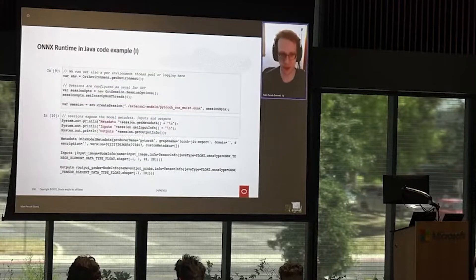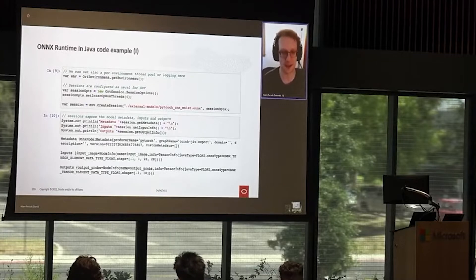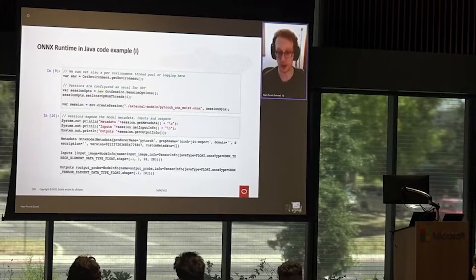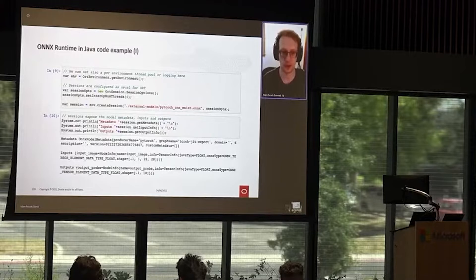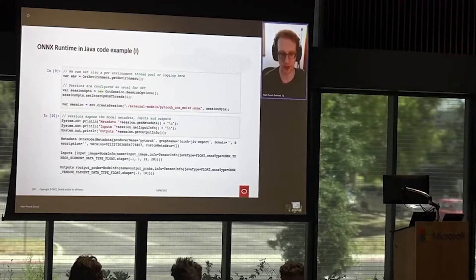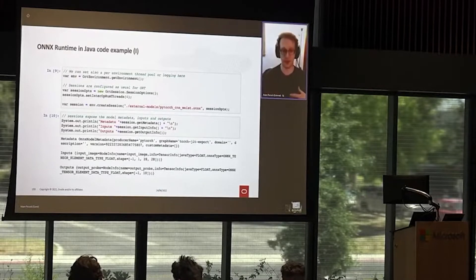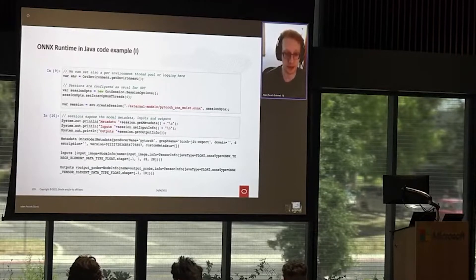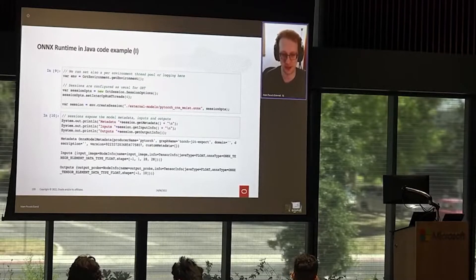Let's look at a quick code example. It looks very much like the Python and other APIs — we're trying to be simple and similar to other things. You have to make an ONNX environment, where you can control a per-environment thread pool or the logging. Then you make some session options, set the number of threads you're using, and load a model by reading an ONNX model off disk, or you can read a byte array in from memory.